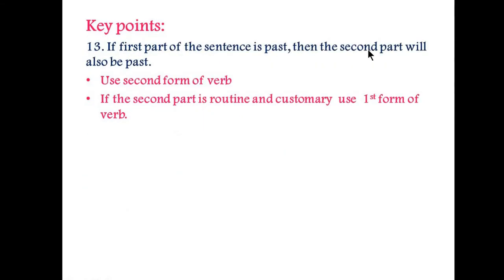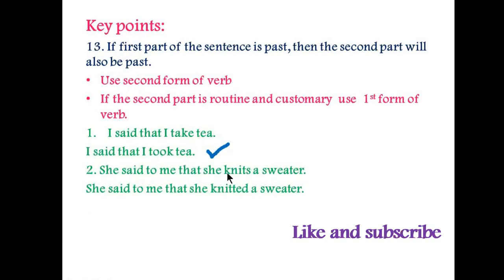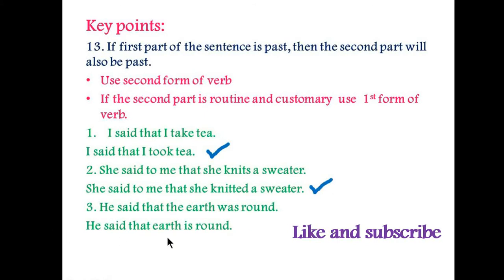Key point number thirteen: if the first part of the sentence is past tense, then the second part will also be past — you use the verb second form. However, if the second part of the sentence is routine or customary, you use the first form. For example, 'I said that I take tea' is incorrect. 'I said that I took tea' is correct — using the second form 'took'. 'She said to me that she knits a sweater' is incorrect. 'She said to me that she knitted a sweater' is correct. 'He said that the earth was road' is incorrect — 'He said that the earth is round' is correct because it is a universal fact.